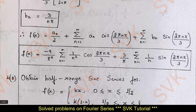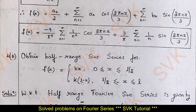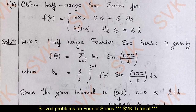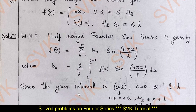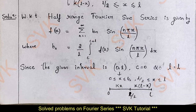Moving on to the next problem: obtain the half-range Fourier sine series for f(x) = kx on [0, l/2] and k(l − x) on [l/2, l]. The half-range Fourier sine series is given by f(x) = Σ bₙ sin(nπx/l), where bₙ = (2/l) ∫₀ˡ f(x) sin(nπx/l) dx. Since the interval is 0 to l and c = 0, l remains l, and x is split over [0, l/2] and [l/2, l].